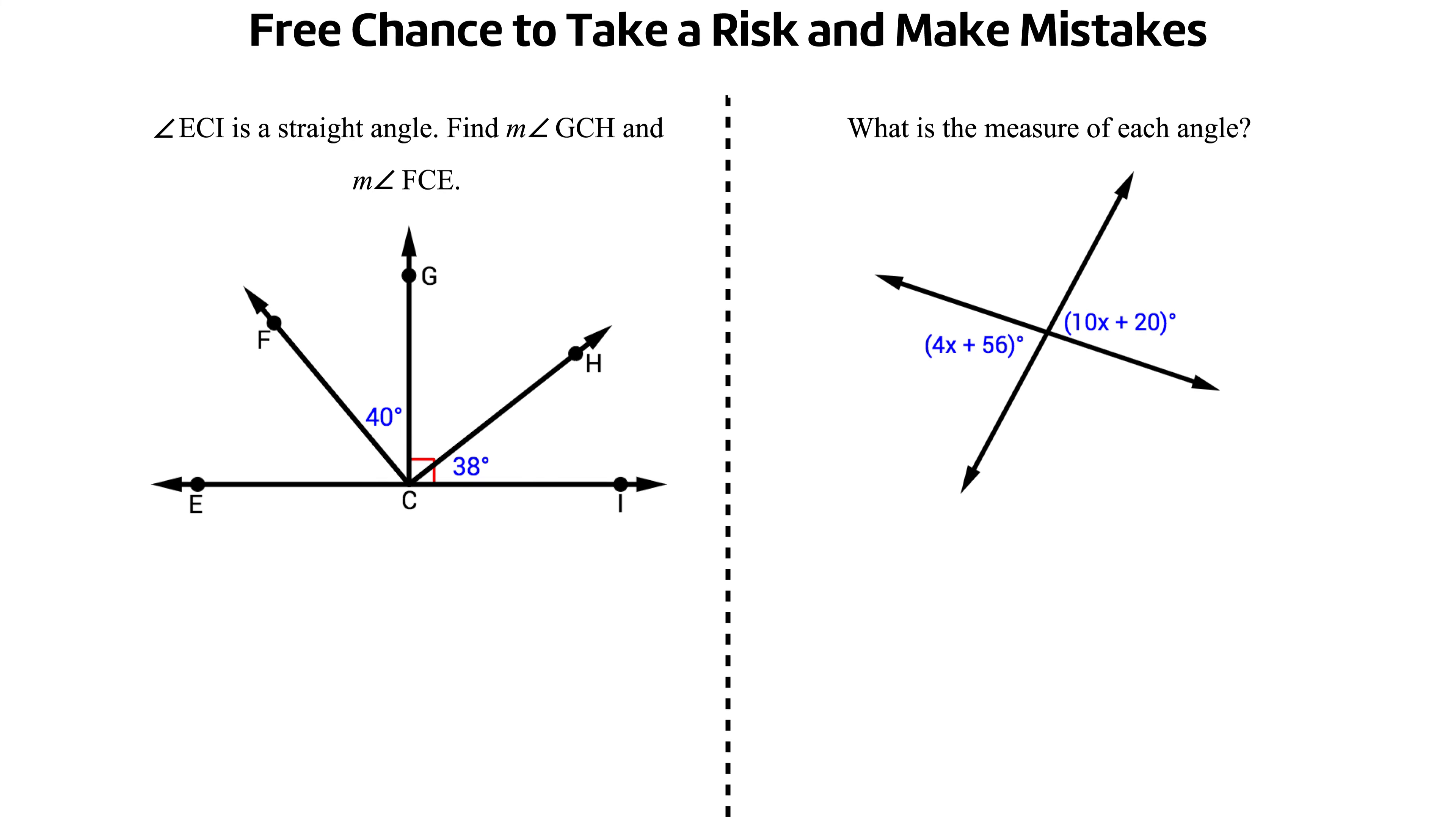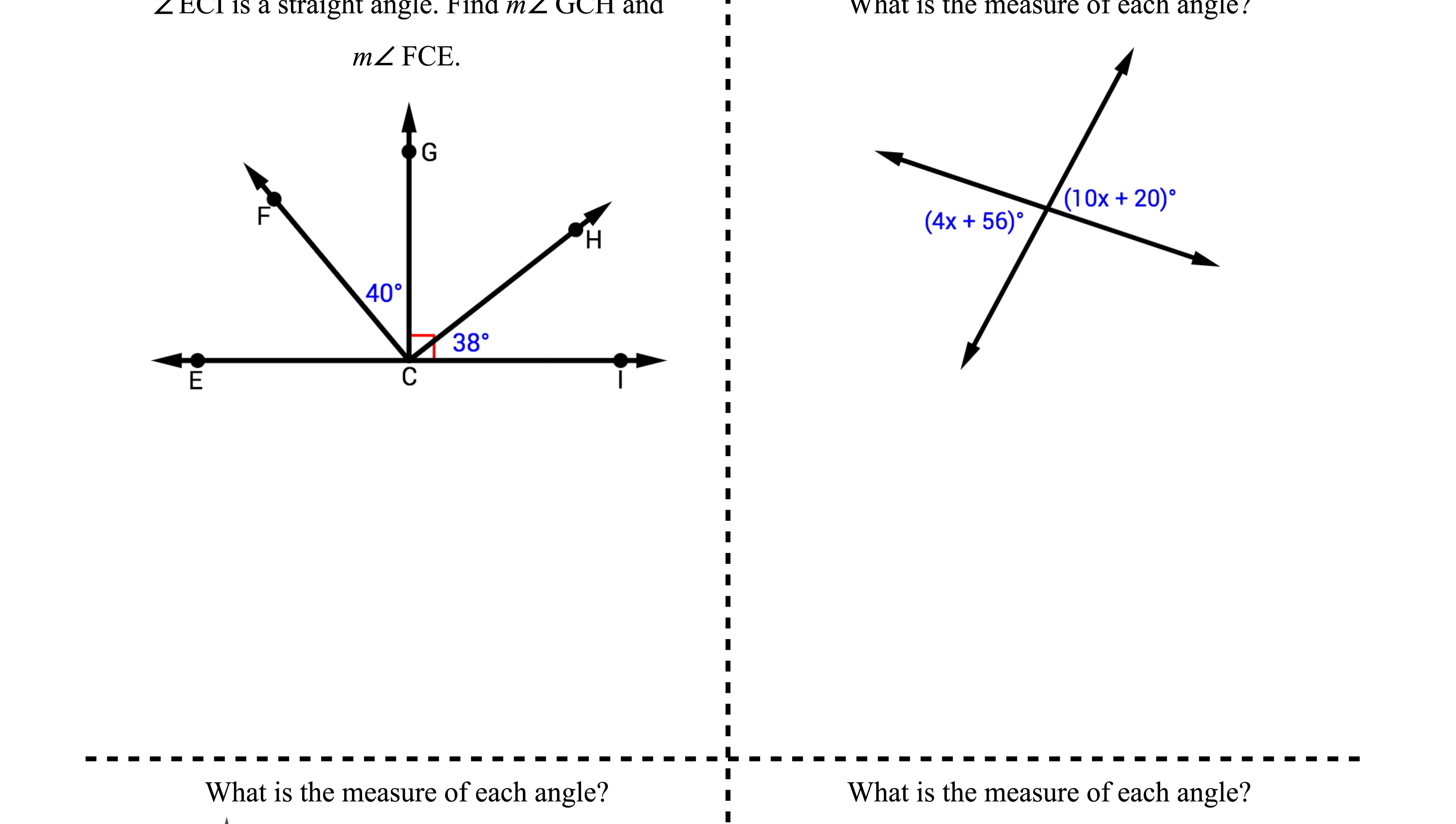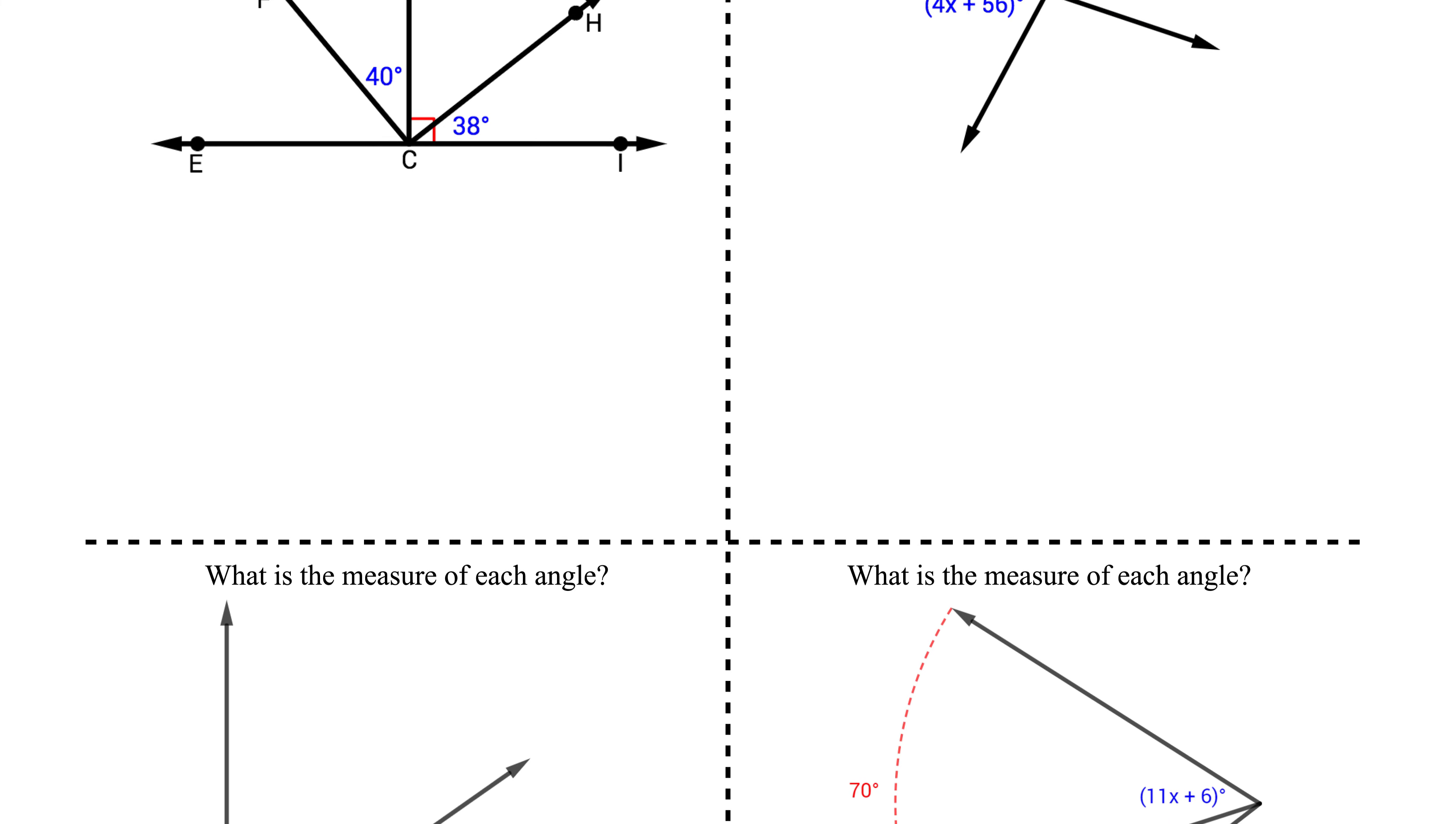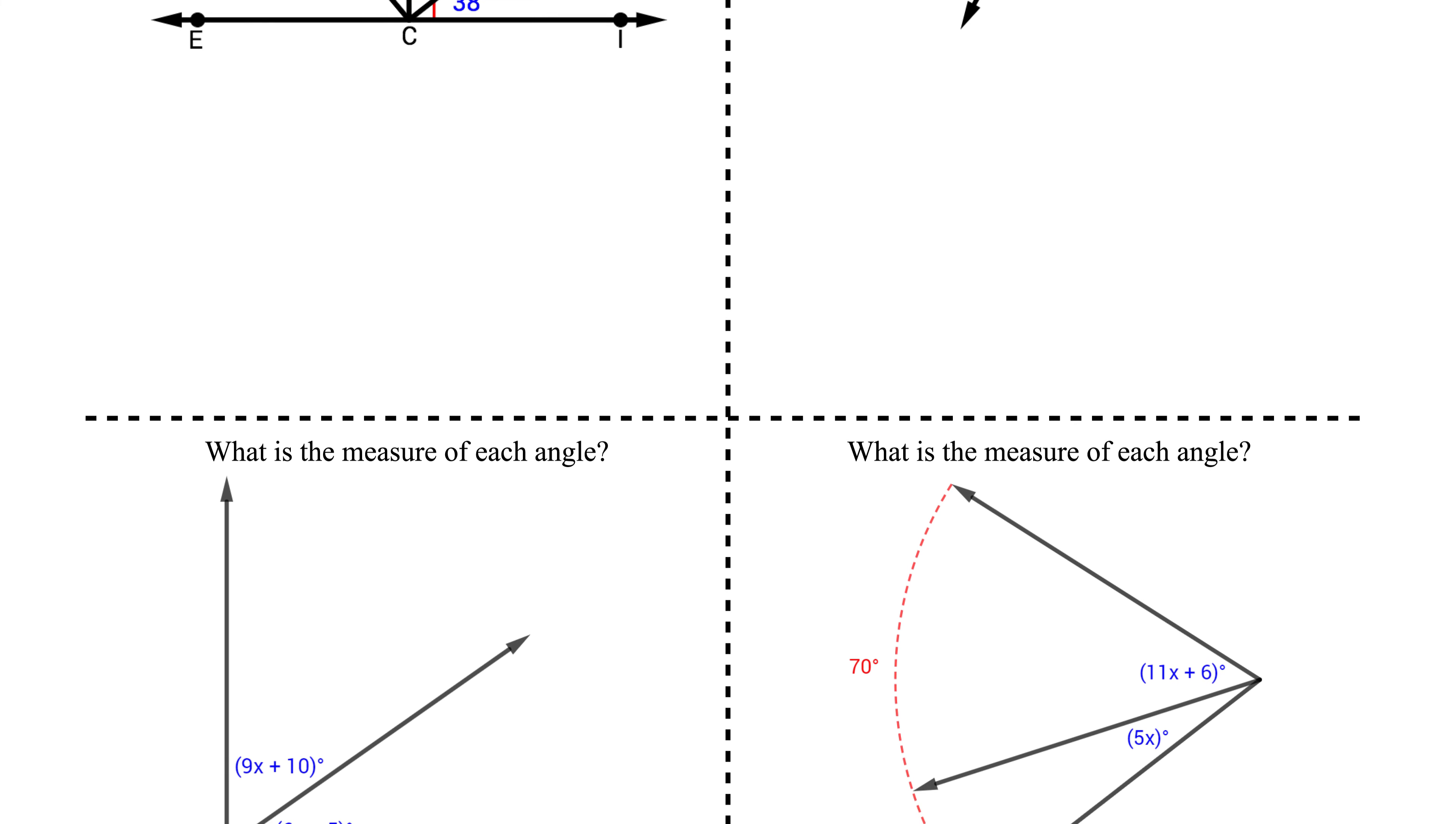Here's an example of a free chance for my geometry class. As you can see, it's short. This one is four questions, but sometimes free chances can be as short as two questions. The goal is to get a quick snapshot of student work, not an entire encyclopedia.